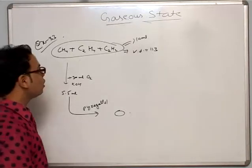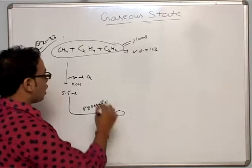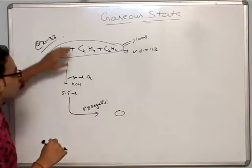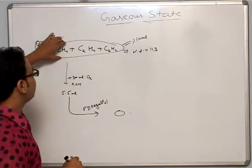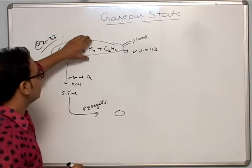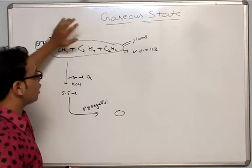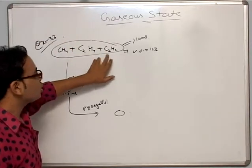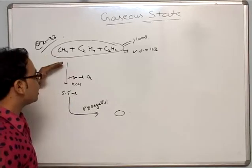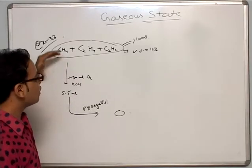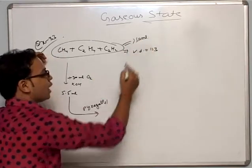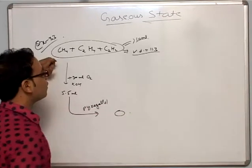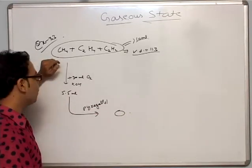Example No. 33. This is a very good example. In this case, we have a 3-gas mixture: Methane, Ethene, and Ethyne — CH4, C2H4, and C2H2. This is the 3-gas mixture and it has a volume of 10 ml. The vapor density of this mixture is 11.3.